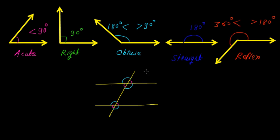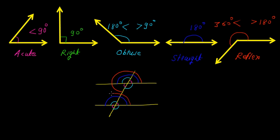Now we can show the straight angle. Here you can see the exact measure of this angle is 180 degree. Similarly, here also we can show the straight angle and the measure of this straight angle is 180 degree. We can also show the reflex angle, so in case of reflex angle whose measure is greater than 180 degree and less than 360 degree, so here if you start like this, we can have the measure of this angle is greater than 180 and less than 360. Similarly, we can show this in this diagram.